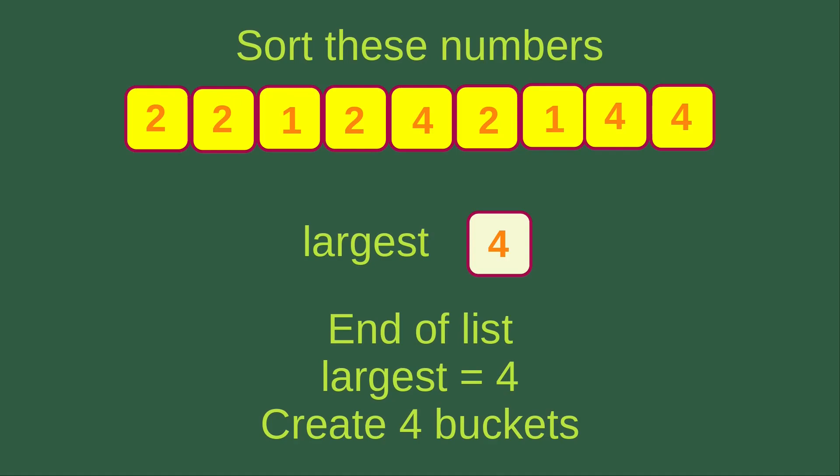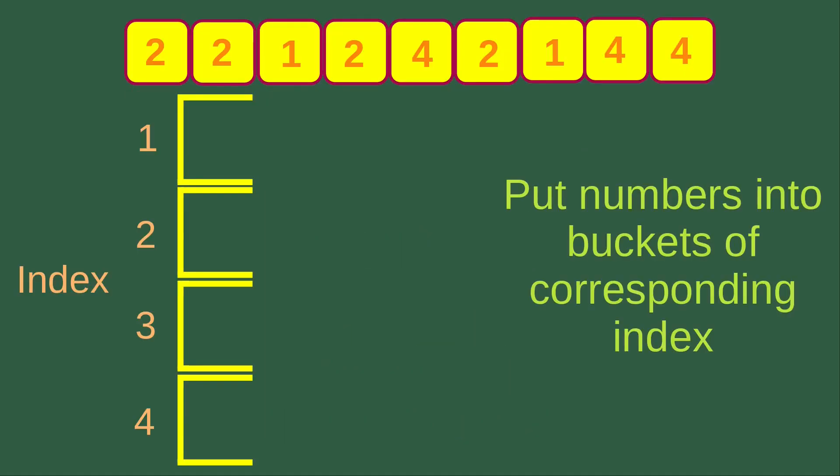So we can say that the largest value is four in the unsorted list. That means I have to create four buckets. Now I have four buckets with indices one, two, three, and four. I'm going to put the numbers into the buckets of the corresponding index.